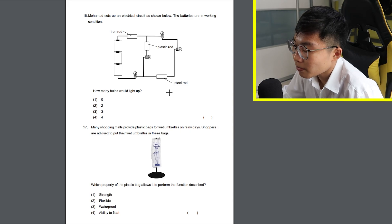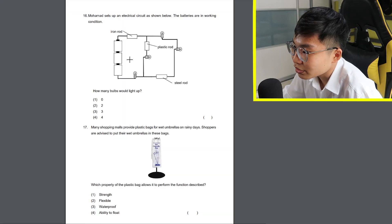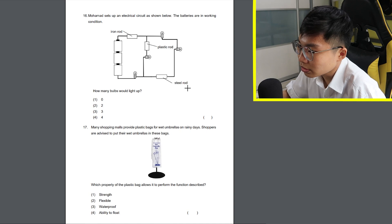16? How many bulbs will light up? Wait, they teach physics in primary school? I thought it's only in secondary school but okay. So these are the batteries. So iron and steel are conductors. Plastic is not. So the answer is 3.